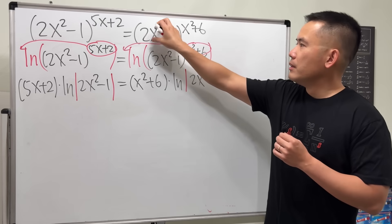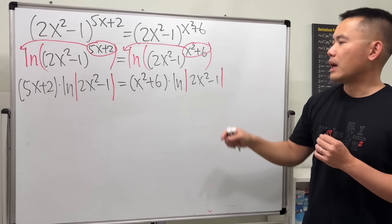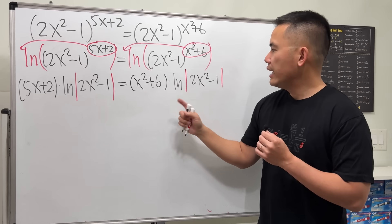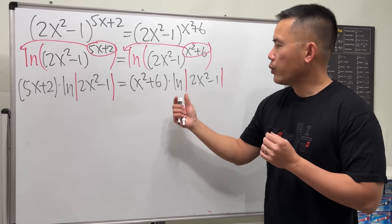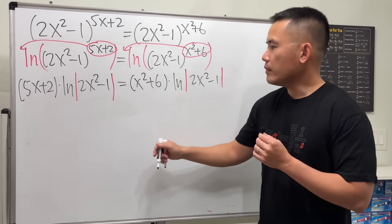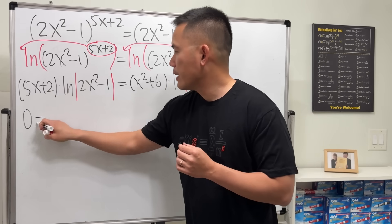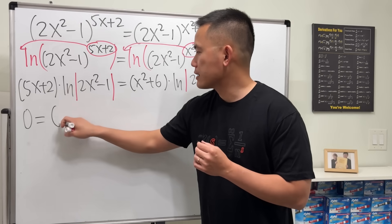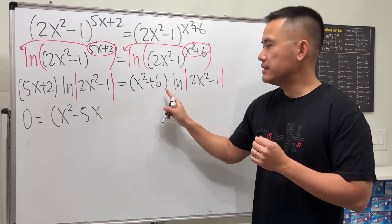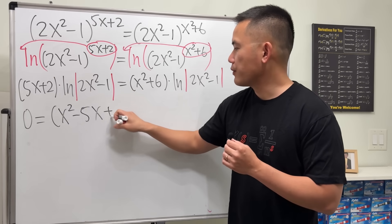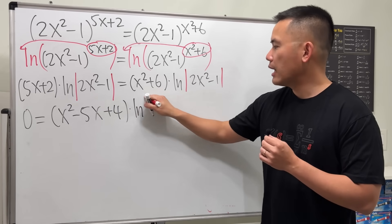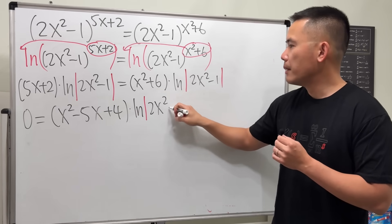Now we don't have a variable base to a variable power, so it's slightly easier. Moving everything to one side and factoring out the ln, we get: (x² - 5x + 4) · ln|2x² - 1| = 0.